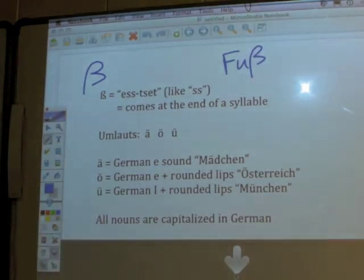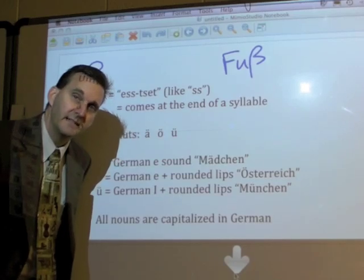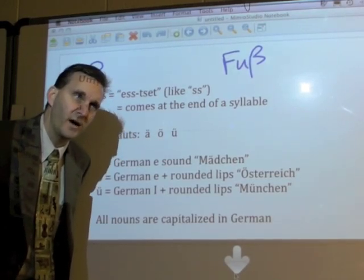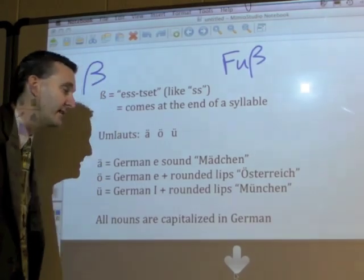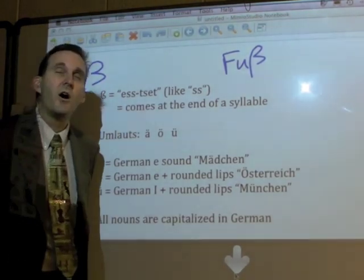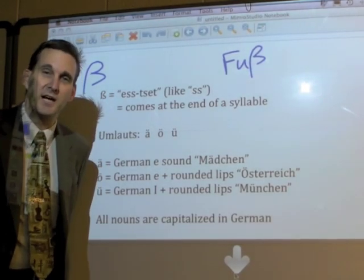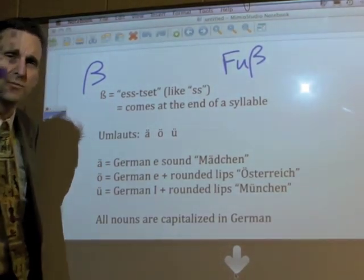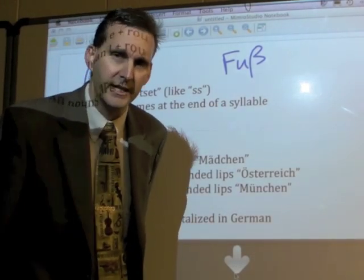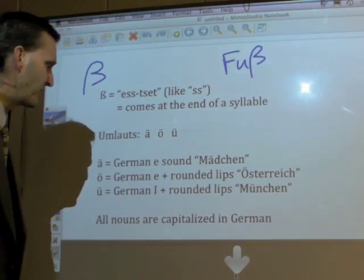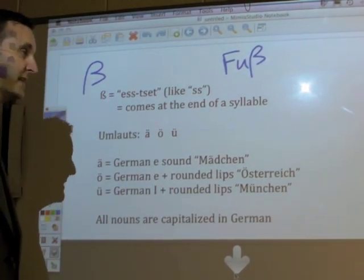You're going to find in German that all nouns are capitalized. That's a rule I like to get out there early, so when you see why a word is capitalized, it's because it's a noun. There's actually very easy capitalization rules: all nouns are capitalized, the beginning of a sentence is capitalized, and there's one other rule about what we call the formal 'U', which we'll get to in a couple of weeks. There are only three real rules about capitalization in German.